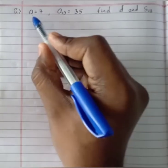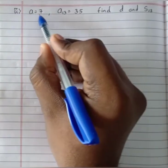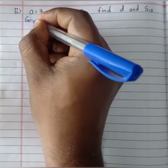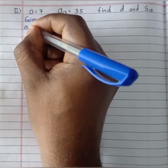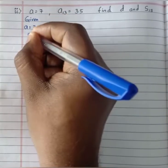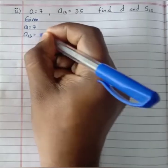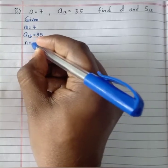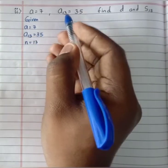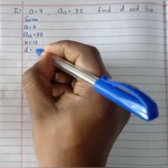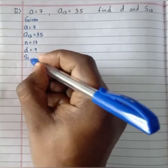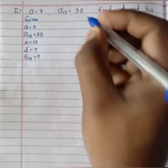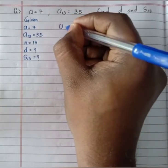Moving to the next question: given a equals 7, a13 equals 35, find the value of d and S13. Writing the given data: a equals 7, a13 equals 35, so the 13th term equals 35 and n equals 13. We should find d and S13.